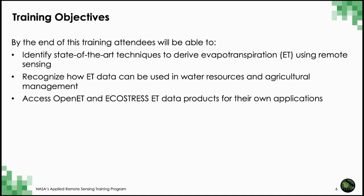That brings us to our training objectives for this webinar series. By the end of this training, we will be able to identify state-of-the-art techniques to derive ET using remote sensing, recognize how ET data can be used in water resources and agricultural management, and access OpenET and EcoStress data products for applications. OpenET is derived from multiple satellites, and EcoStress ET is derived from the EcoStress sensor on NASA's International Space Station.